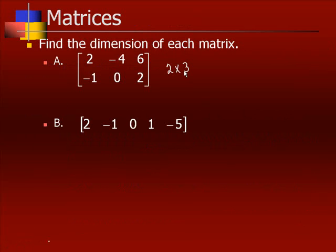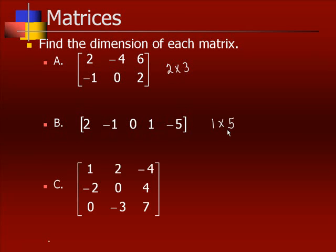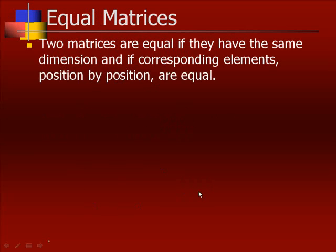This one has one row but it has five columns, so this is a 1 by 5 matrix. Number C has three rows and three columns, so this would be a 3 by 3 matrix.